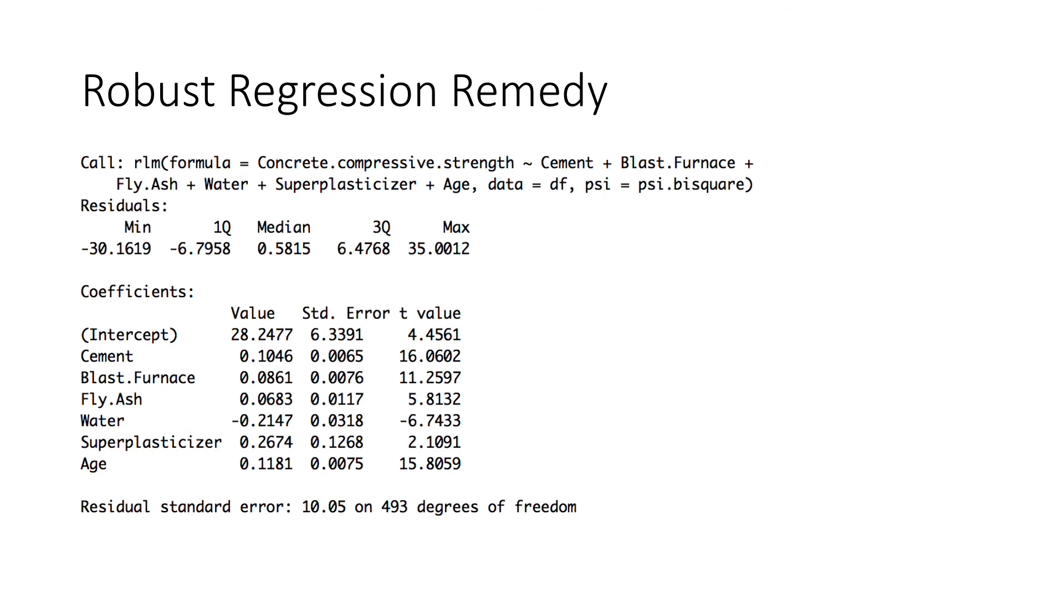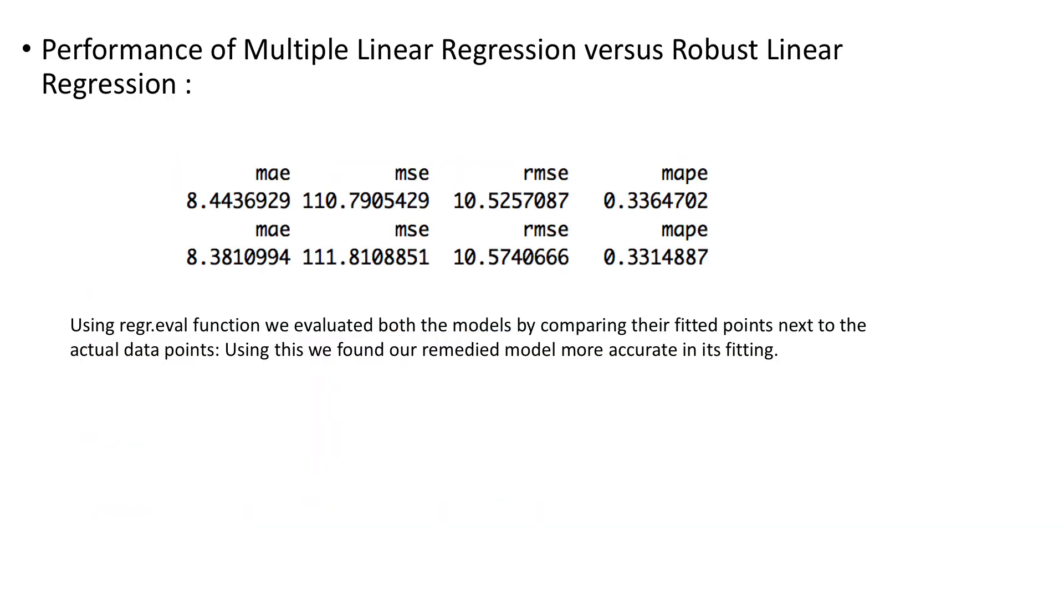The remedy for a situation where we have a lot of influential cases is using the robust regression, which is what I did with the RLM function. So, our robust regression linear model outperformed our previous multiple linear regression model, as shown by the decrease in mean absolute error and the mean absolute percent error when plotting the model's fitted points against the actual points using the regression evaluation function.